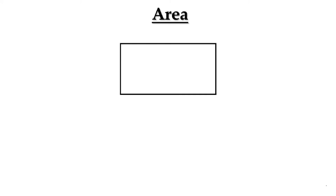Now let's learn about the area of a rectangle. Area means the place occupied by an object. You can see the region inside the rectangle, inside the perimeter, is the area of the rectangle. Area of a rectangle equals the longest side into the shortest side, that is L into B.